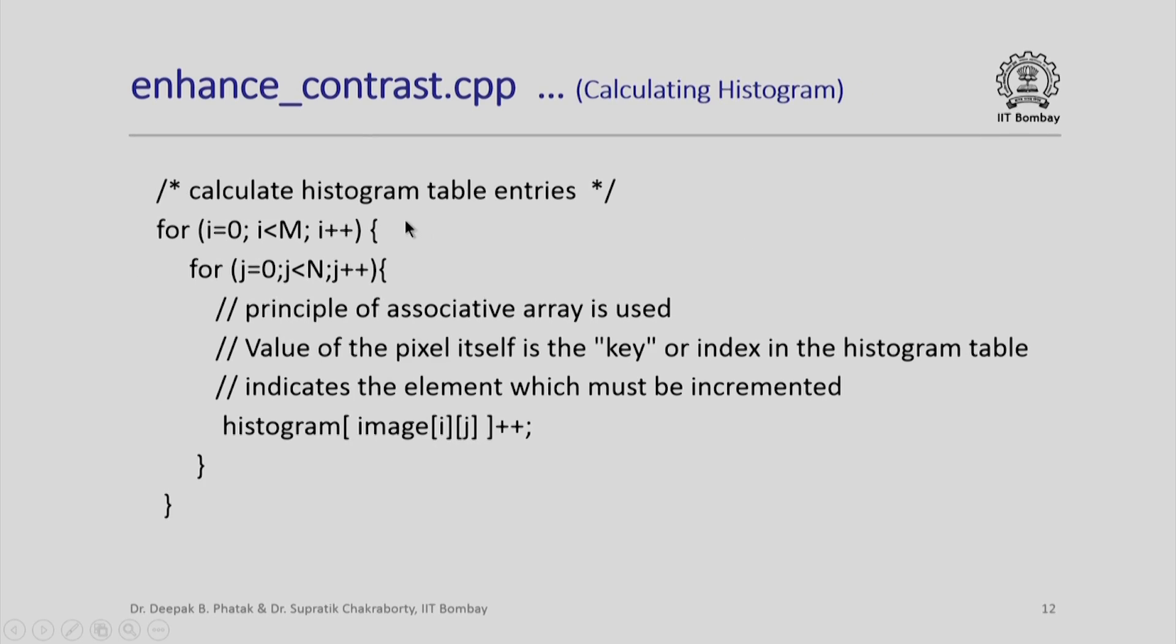Next, I calculate the histogram table entry. You will remember the method that we decided to use exploiting the associative properties of the image pixel values and the array elements. I set up a nested iteration 0 to M-1, 0 to N-1. I scan all the elements of the picture array and simply use the (i,j)th element of image value as an index in the histogram array and increment it. Notice the simplest computation in a single nested iteration will get me the entire histogram value.